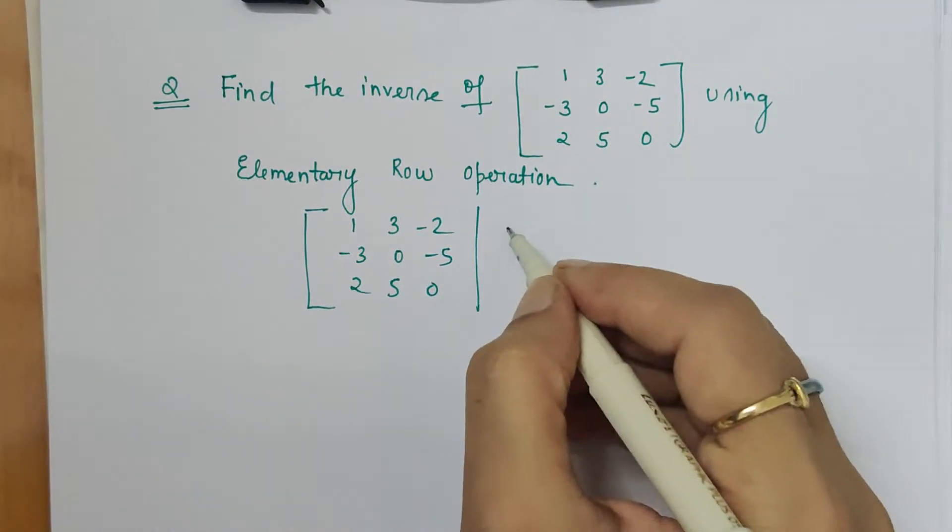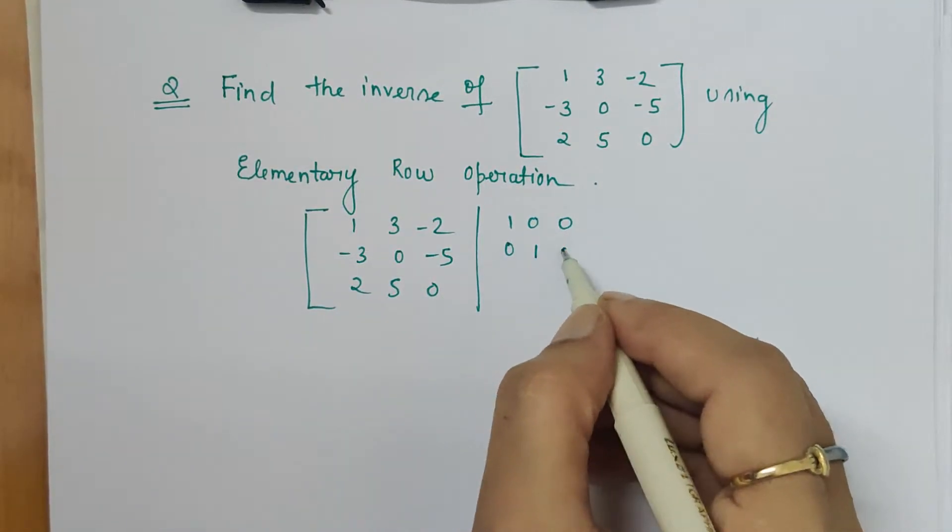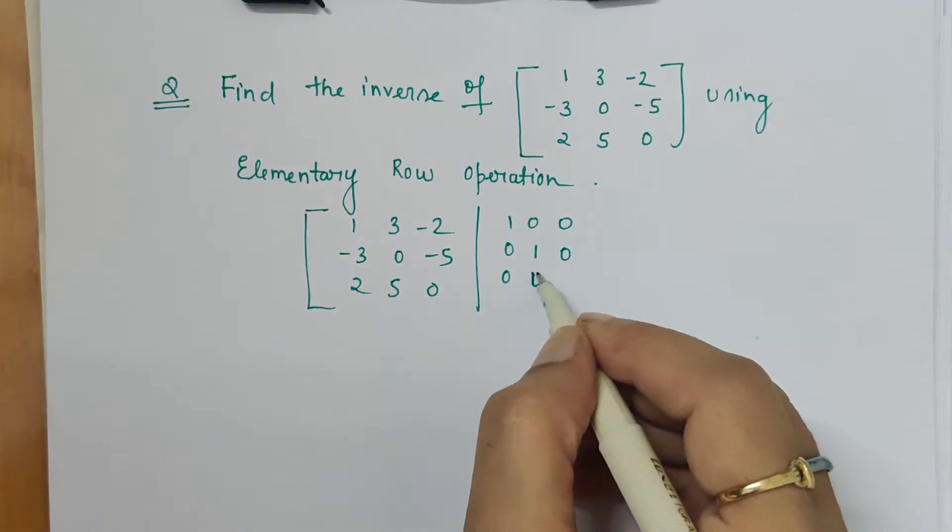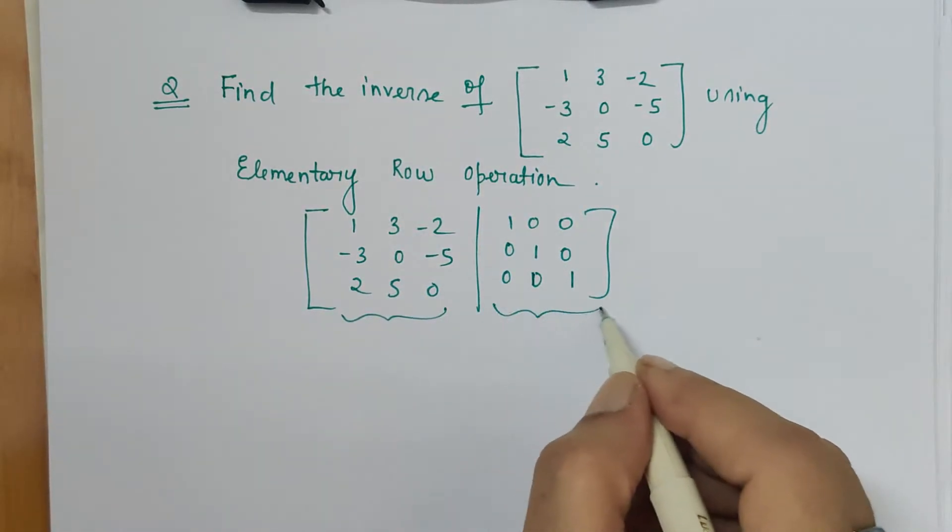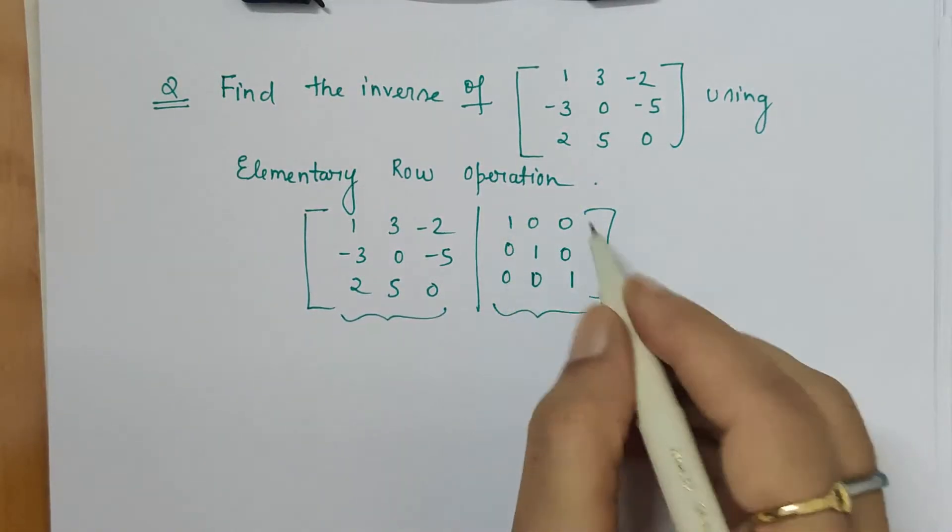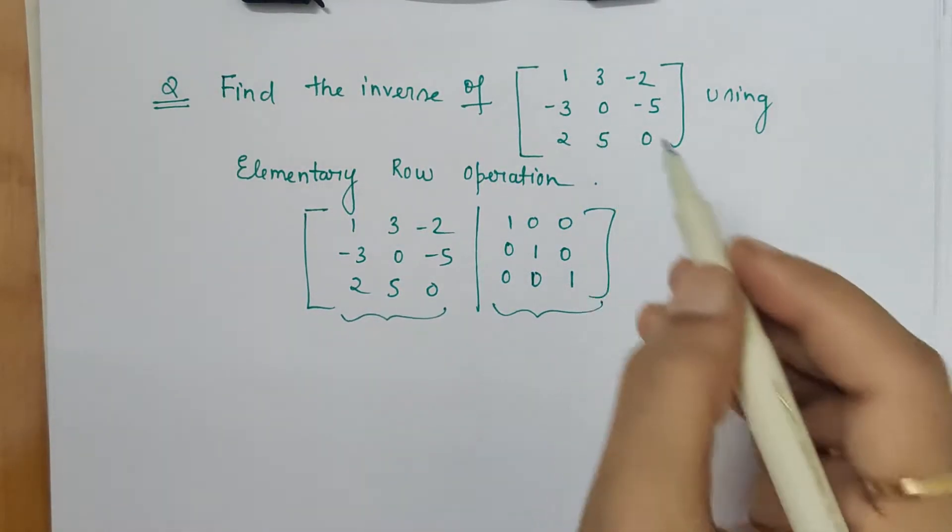The given matrix and the identity matrix we are combining, and our target is to make this portion as identity. Whatever the resultant matrix we get here in the last step will be the inverse of the given matrix.